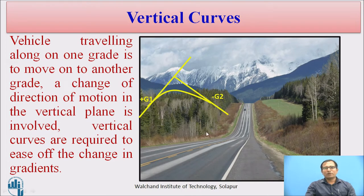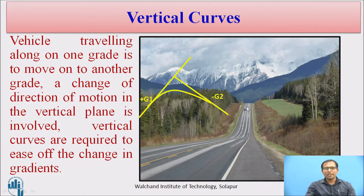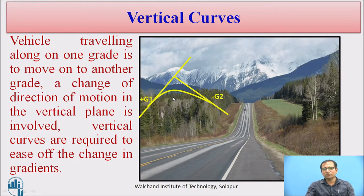When a vehicle traveling along one grade needs to move on another grade, a change of direction of motion in the vertical plane is involved. Vertical curves are required to ease the change in gradient, connecting plus G1 and G2 by a smooth vertical curve.